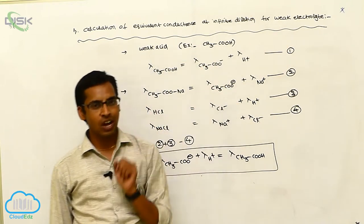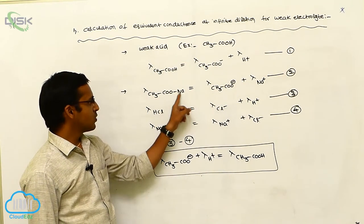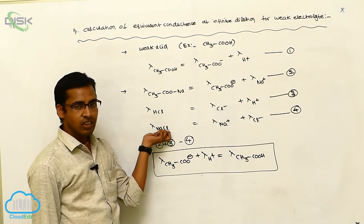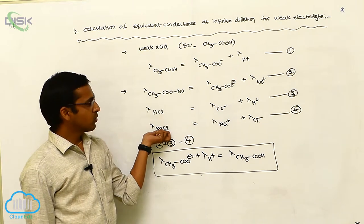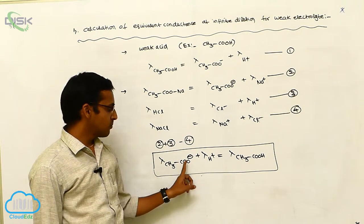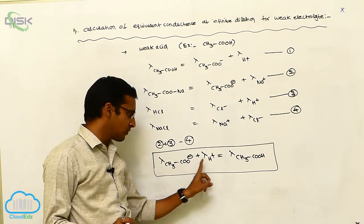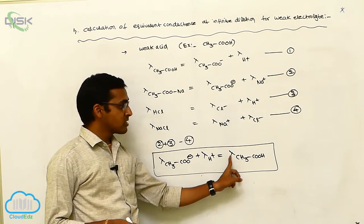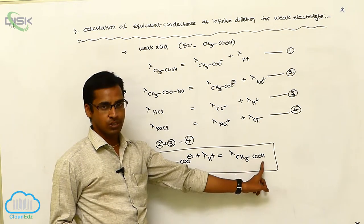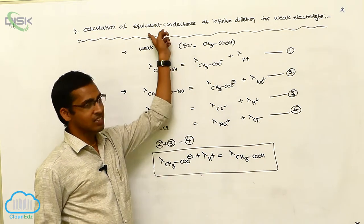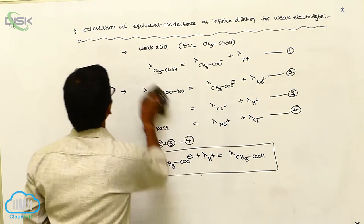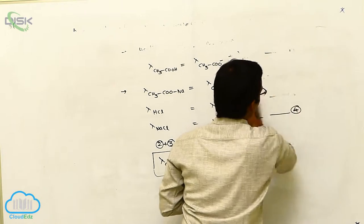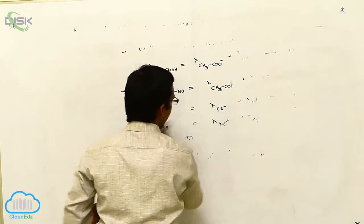For the calculation of weak electrolyte conductance, first you consider two strong electrolytes — one is sodium acetate, another one is hydrogen chloride — along with one salt solution. The sum of equivalent conductance of cation and anion equals the equivalent conductance of that solution; this is called Kohlrausch's law. The second application is the calculation of ionic mobility.